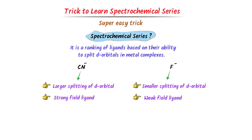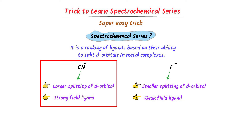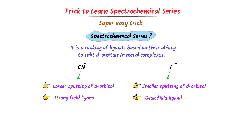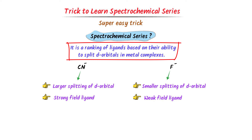Therefore, remember that if a ligand is causing larger splitting of d orbitals, it is known as a strong field ligand. If a ligand is causing smaller splitting of d orbitals, it is known as a weak field ligand. Note down this important definition of spectrochemical series.